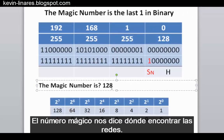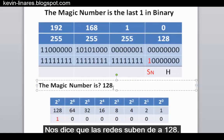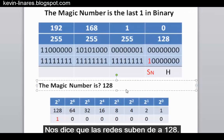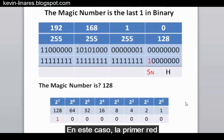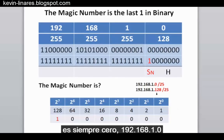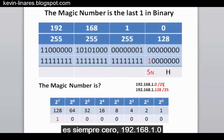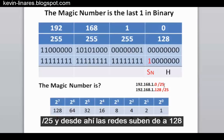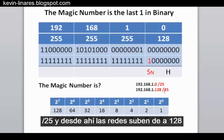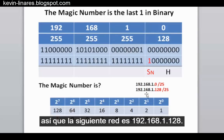The magic number tells us where to find the networks — it tells us the networks will go up by 128. The first network is always 0, so 192.168.1.0 slash 25. From there, the networks go up by 128, so the next network is 192.168.1.128.